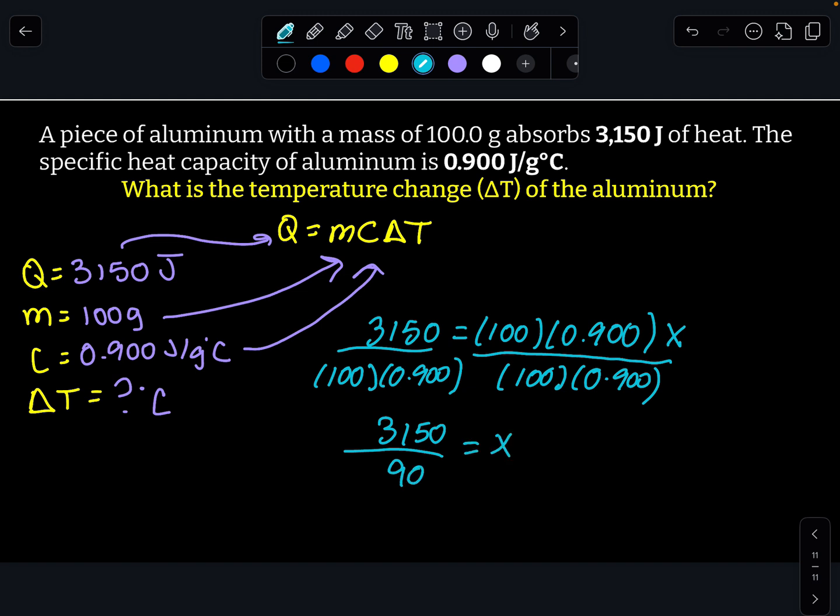Fraction bar tells me I need to divide. So 3,150 divided by 90, and I get a value of 35. Because I was solving for delta t, that means my delta t is 35 degrees Celsius. And that's all there is to it.